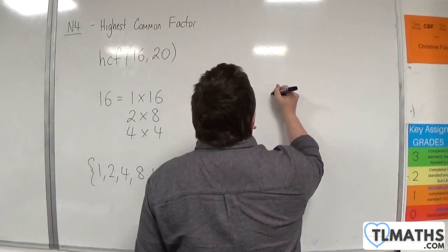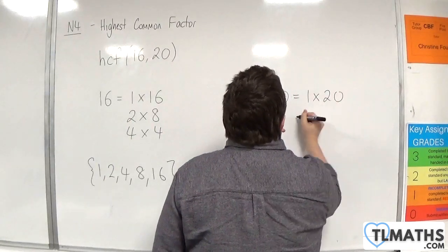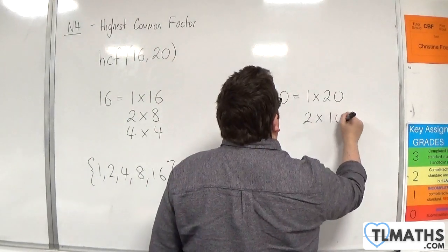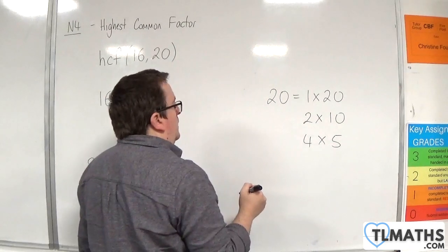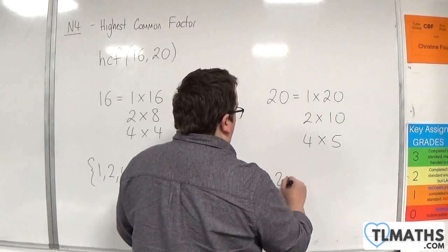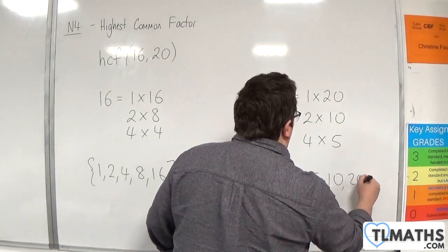Now, as for 20, 20 is 1 times 20, or 2 times 10, or 4 times 5. So the factors of 20 are 1, 2, 4, 5, 10, and 20.